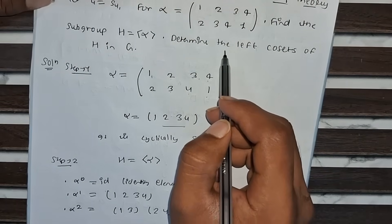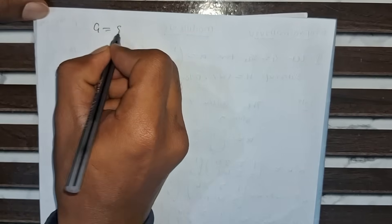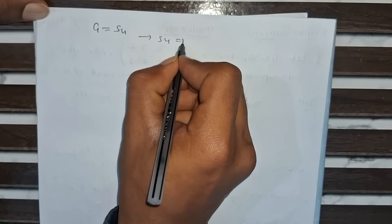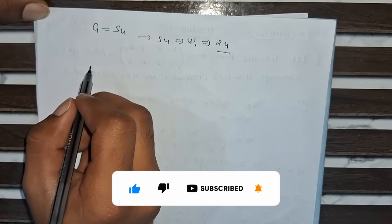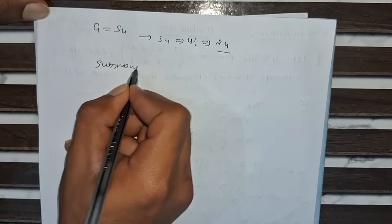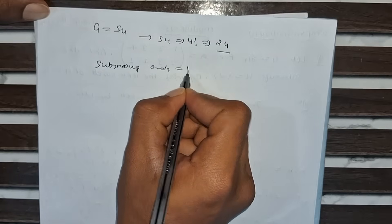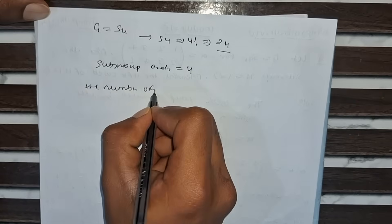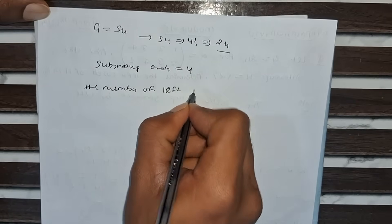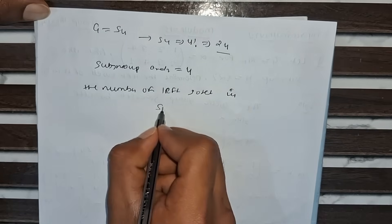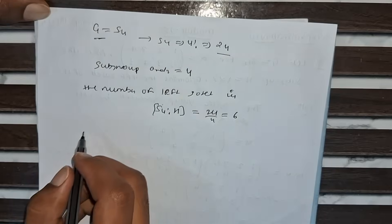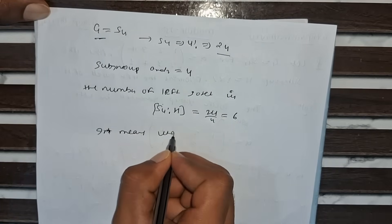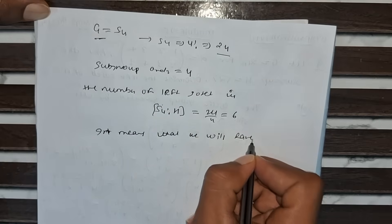Now our second part is to find the left cosets of H in G, where G equals S4. S4 has 4 factorial elements, which means 24. So the symmetric group S4 has order 24. The order of the subgroup H is 4. So the number of left cosets is 24 divided by 4, which equals 6. This means we will have 6 cosets.